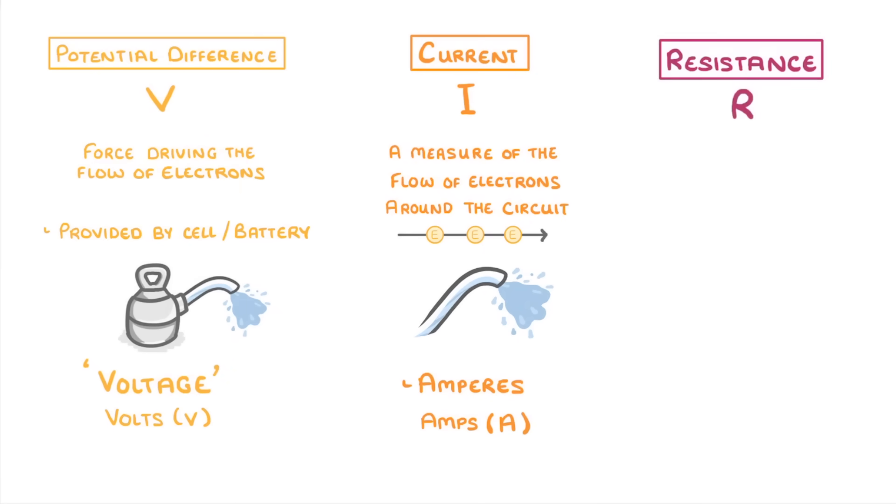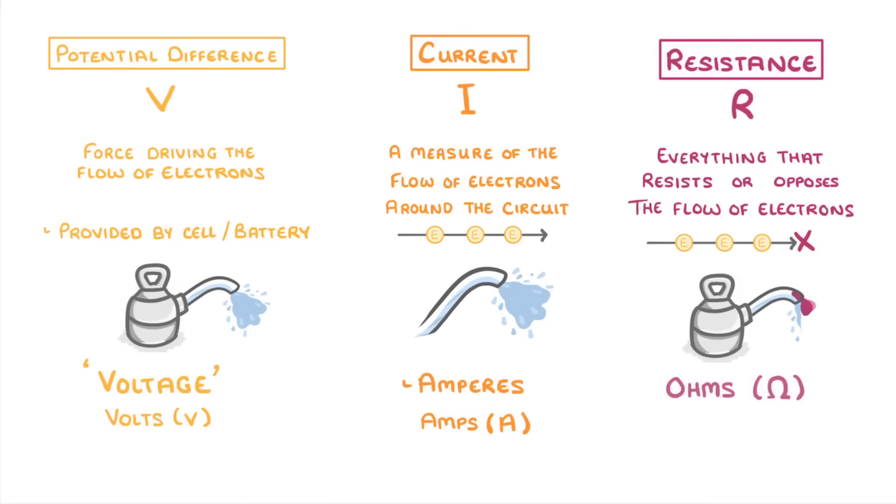Finally, resistance, R, is exactly what the name suggests. It's everything that resists, or opposes, the flow of electrons, similar to a partial blockage in our pipe example. And it's measured in ohms.